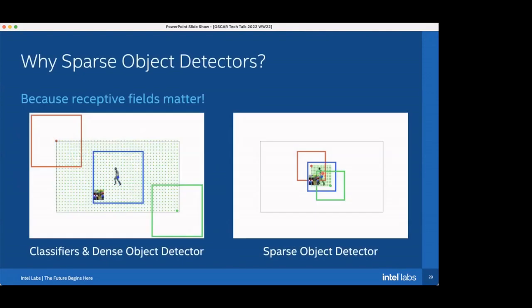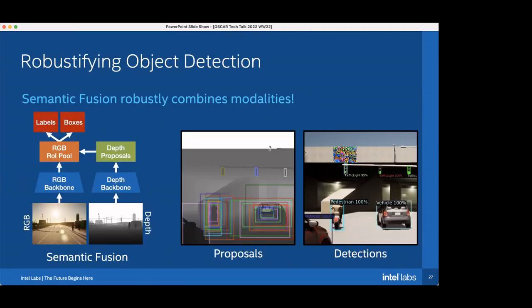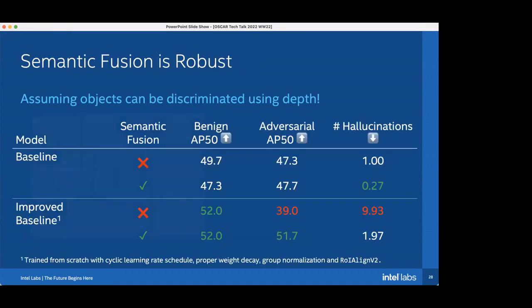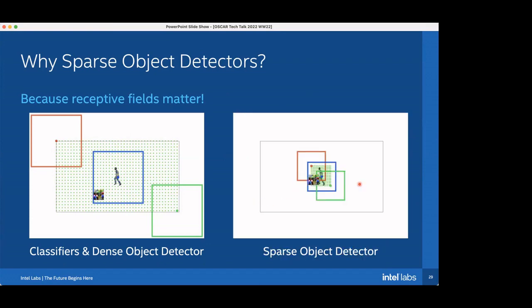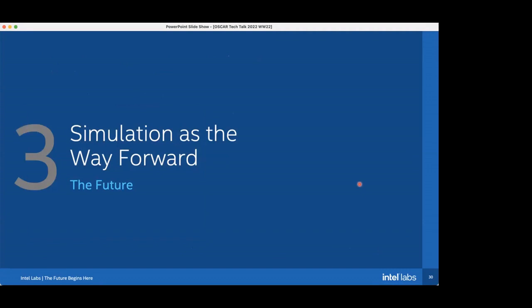Sparse object detectors like Faster RCNN are more robust, and applying the semantic fusion technique described here creates decently robust object detectors. We think these could be used with our robust features approach to mitigate a certain class of threats — specifically patch attacks. When I set up the problem I talked about adding a perturbation to the whole image, but there are reasons we think that's not super realistic, which I'll get into in the next section.